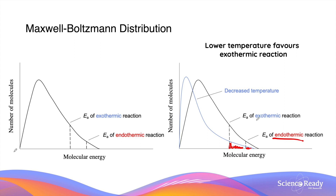If the reaction was originally at equilibrium, the two rates would have been equal. So if the endothermic reaction decreases more than the exothermic reaction, the exothermic reaction rate becomes faster than the endothermic reaction. This is why we typically say that a lower temperature favours the exothermic reaction. This concludes the video on the effect of temperature on reaction rates.